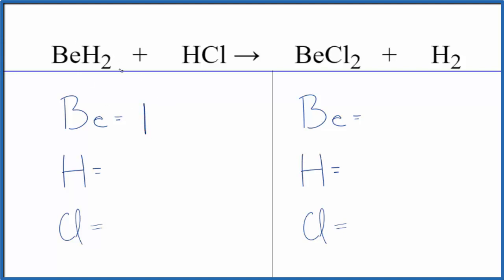We have one Be. Hydrogens, we have two. Be careful, we have one in the hydrochloric acid as well. So we have a total of three. One chlorine atom.